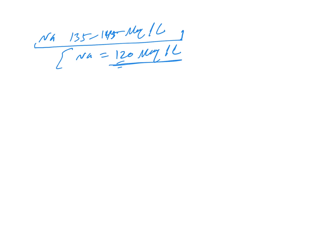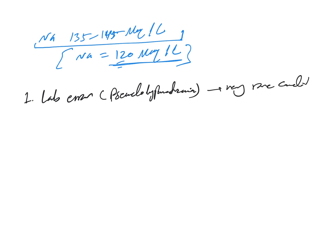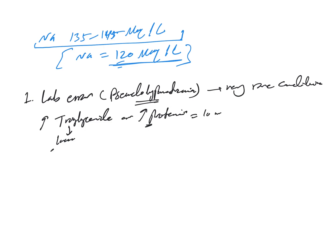Without any further information about this patient, let's quickly go over the possibilities. The first possibility, and one you always need to be careful about, is lab error — also called pseudo-hyponatremia. I won't spend much time on this because it's very rare nowadays since we have newer lab techniques and sodium electrodes in most hospitals. Pseudo-hyponatremia mainly happens because there is too much triglyceride — usually in the thousands — or too much protein in the extracellular fluid, usually above 10 g/dL, as seen in multiple myeloma.